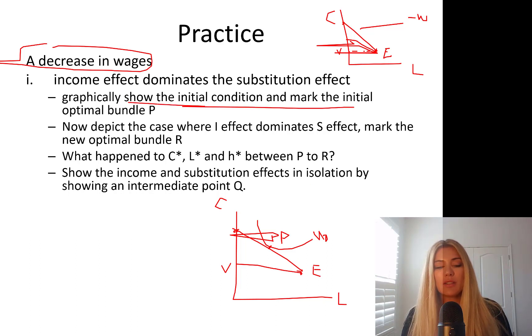You're going to mark it P here. Now, depict the case where income effect dominates substitution effect. Mark the new bundle R. What happened to the consumption, leisure, and hours of work between P to R? So you're going to mark a new R point. I don't know. Is it going to be to this side or to this side?